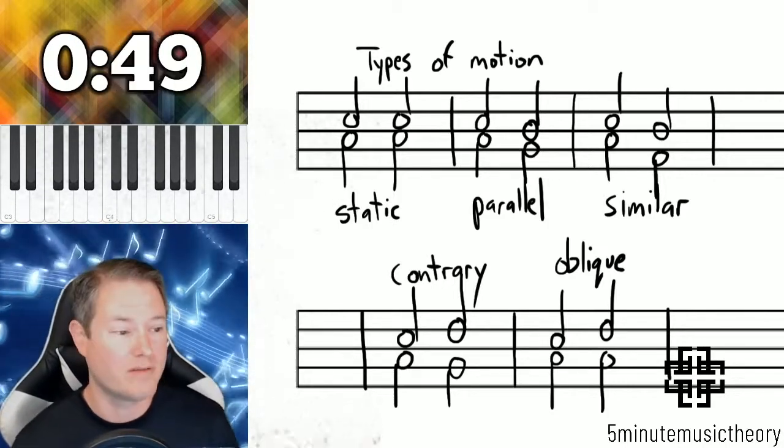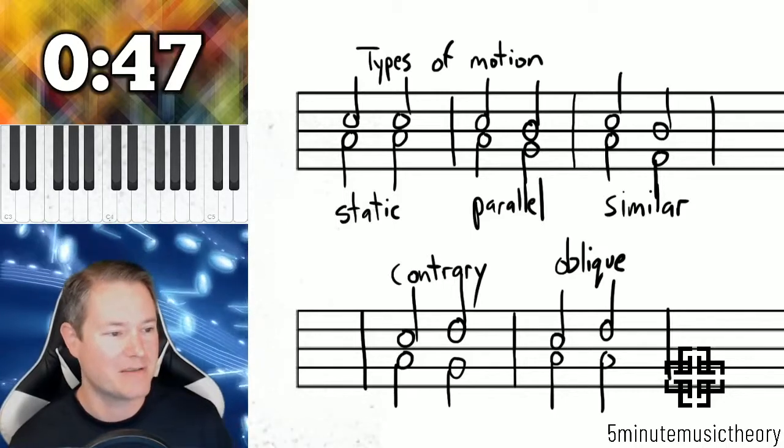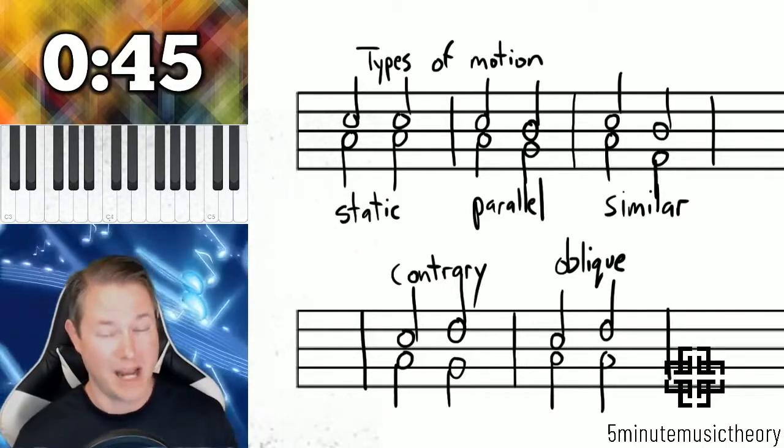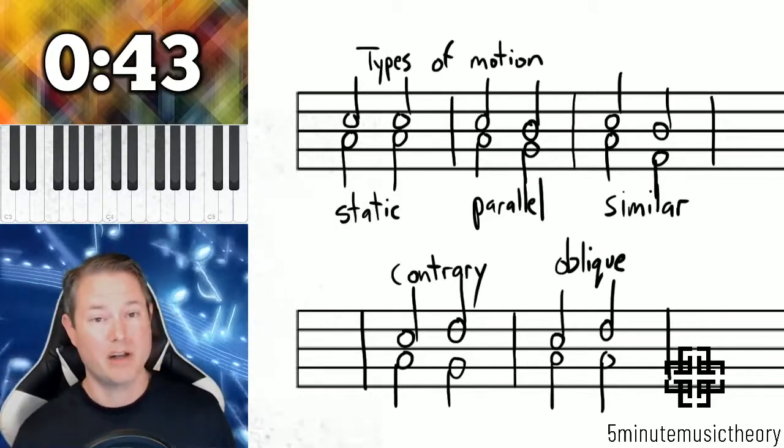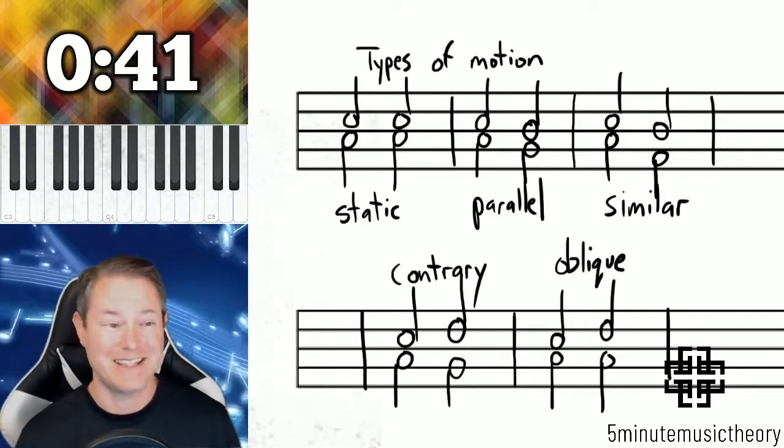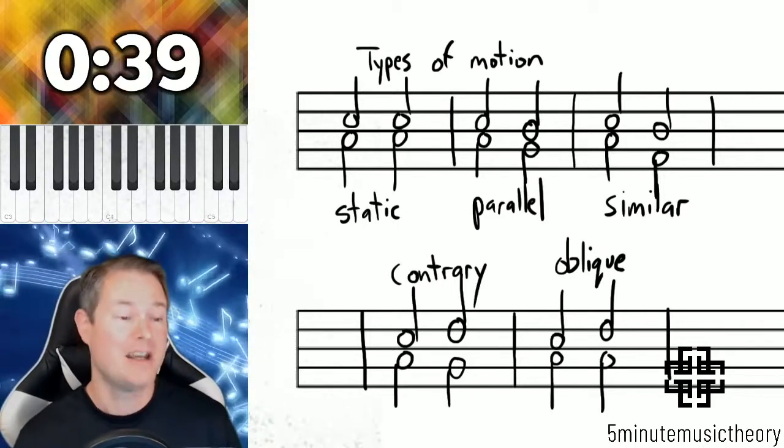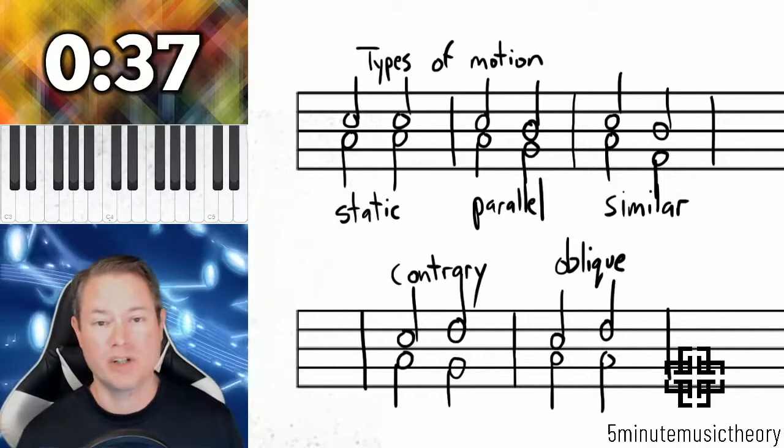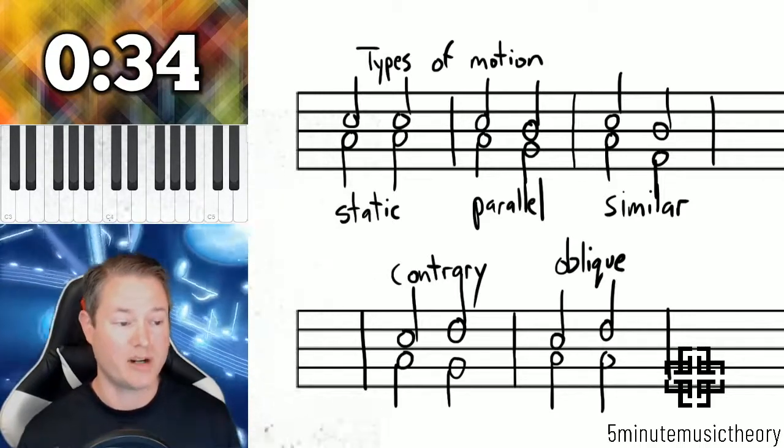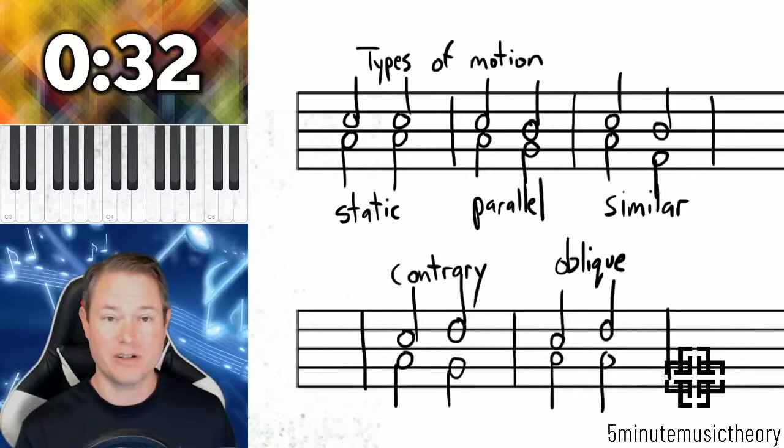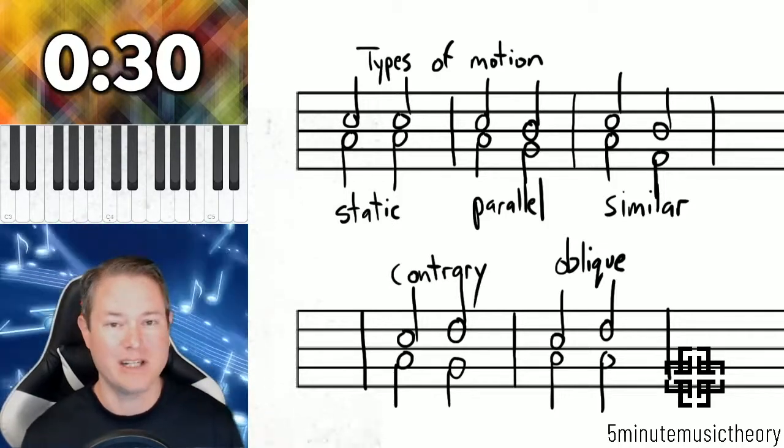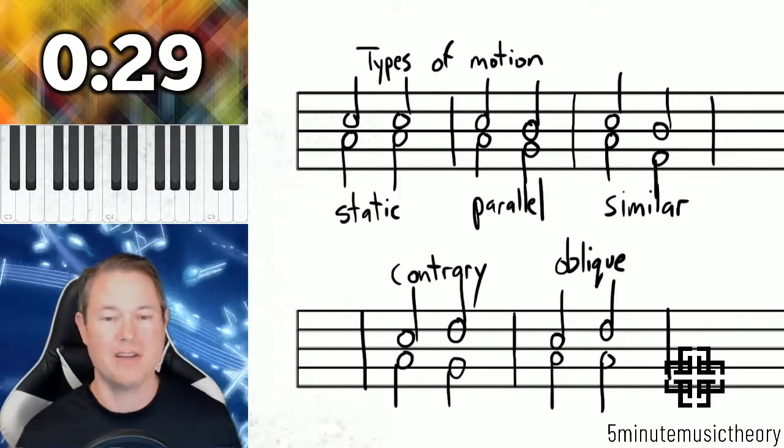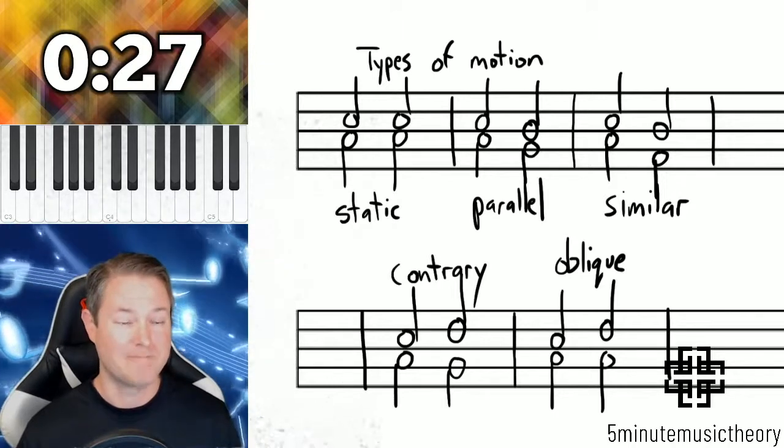So that's it, just a quick overview of these five types of motion. There's the one that's absent of motion, static. Parallel moves the same direction in the same distance on the staff, and similar motion moves the same direction, different distances. Contrary moves opposite of each other, towards or away from, and oblique is one voice remaining the same and the other one moving either away or towards. Thank you.